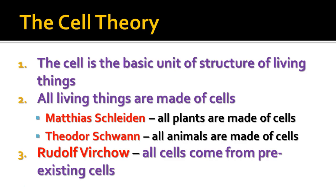The first statement is the cell is the basic unit of structure of living things. All living things are made of cells is the second statement. We owe that statement to two different German scientists: Matthias Schleiden, a botanist studying plants, who discovered that every plant he looked at had cells; and Theodor Schwann, a German zoologist, who said all the animals he looked at had cells. Those statements were combined to say all living things are made of cells.